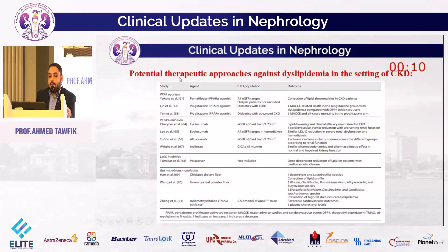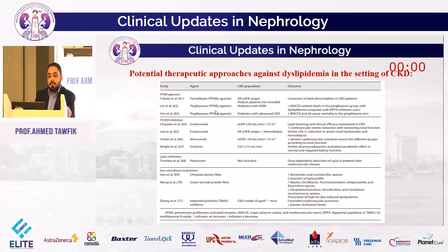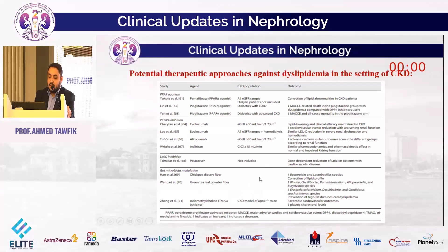Other potential therapeutic approaches against dyslipidemia in the setting of CKD: PPAR alpha agonists (fibrates) act by increased fatty acid oxidation, increased fatty acid uptake, and increased HDL. PPAR gamma agonists or glitazones (pioglitazone) act by increased fatty acid oxidation, decreased triglycerides, decreased LDL, and increased HDL; they decrease major adverse cardiac and cerebrovascular events. Lipoprotein(a) inhibitors are not yet studied in CKD populations. Gut microbiota modulation by taking probiotics, normal flora components, green tea, or other components is also not yet studied enough in CKD populations.